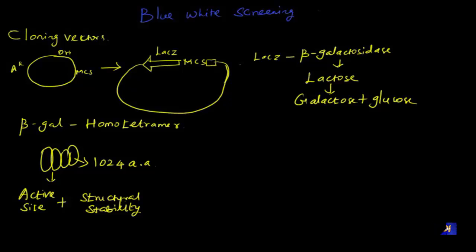Here, the 1024 amino acid sequence is divided into alpha peptide and omega peptide. The alpha peptide exists in the internal regions, and these alpha peptides are responsible for structural stability.